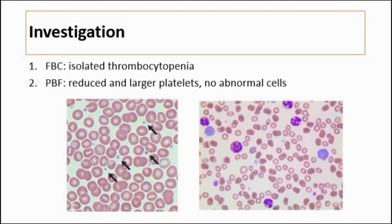For investigation of ITP, we can perform a full blood count where we expect to see isolated thrombocytopenia. We can also do a peripheral blood film, where we expect to see a reduced number of platelets that are larger in size, and there will be no abnormal cells.